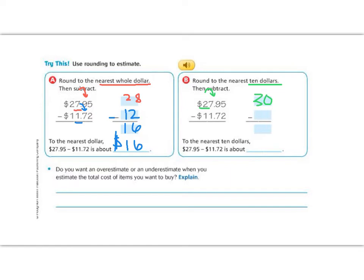Then we look at the tens place of our second digit, and I look next door, and I see a 1. 1 makes me stay the same. So that means that this number is going to stay the same, but the 1 after it is going to change into a 0 because I am rounding to the nearest $10. And 11 is closer to 10 than it is to 20. Now I am going to subtract. 30 minus 10 is 20. So the nearest $10, 27.95 minus 11.72 is about $20.